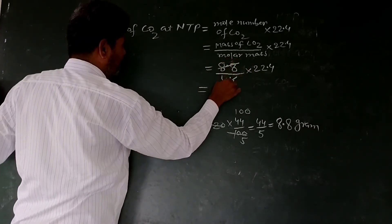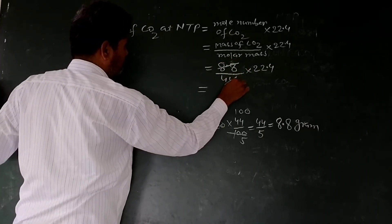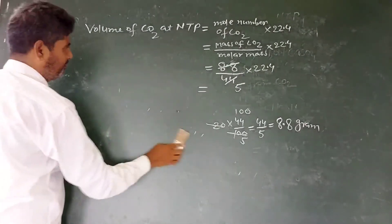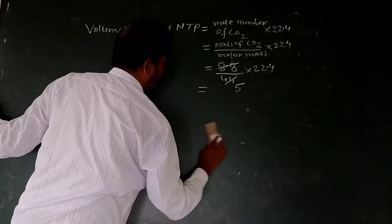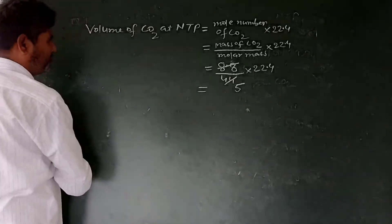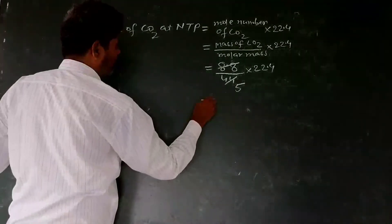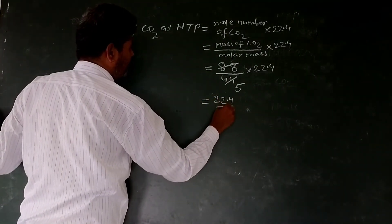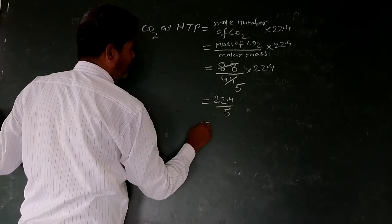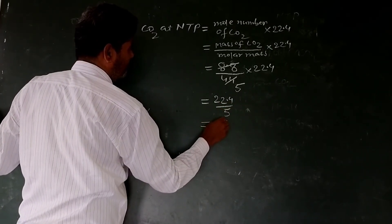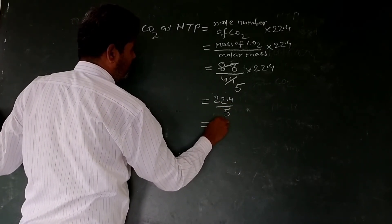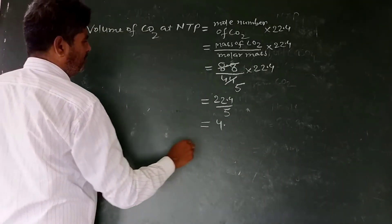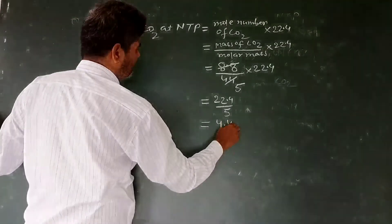Calculating: 8.8/44 = 0.2 moles of CO₂. Volume = 0.2 × 22.4 = 4.48 liters at STP.